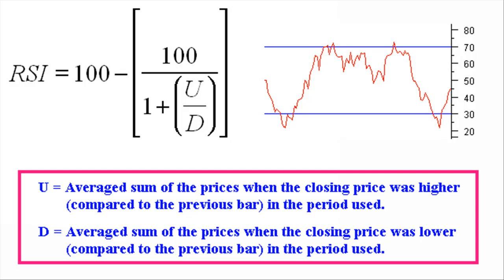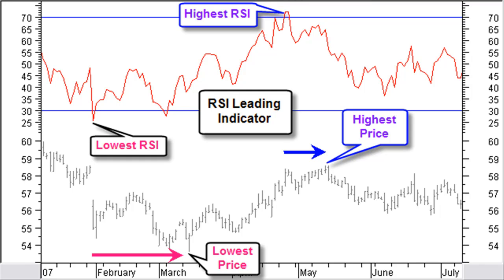RSI measures the relation between the price bars with a higher closing price compared to the previous bar, and between the bars with a lower closing price compared to the previous price bar in a set time period. Originally, Wilder used a 14-day period on daily charts, and this remains the standard and most widely used value today.